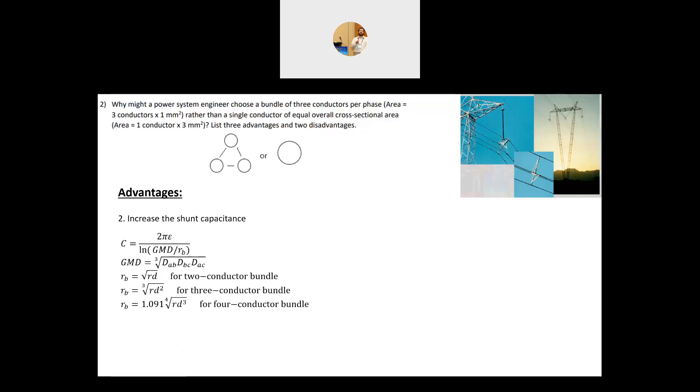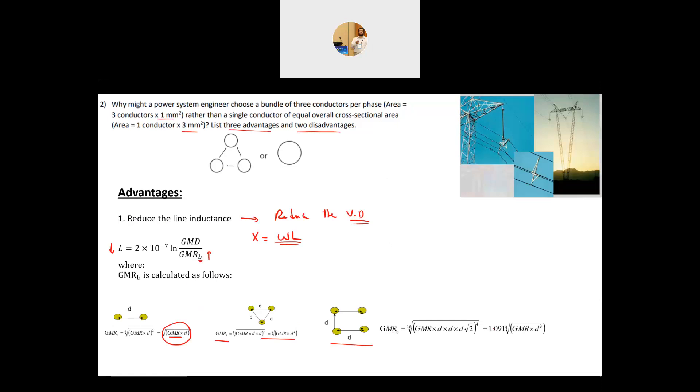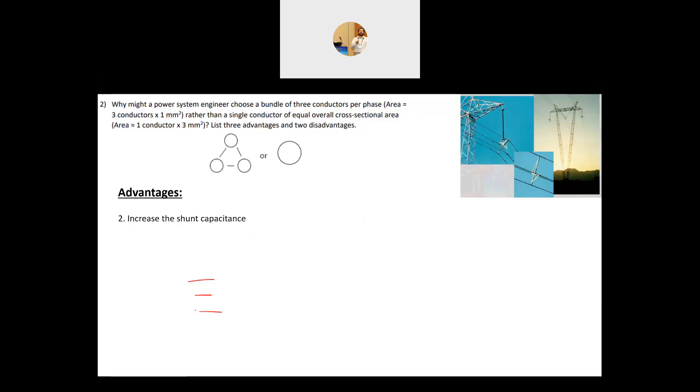Now the RB, the R for two conductors, three and four, they have exactly the same formula like the geometric mean radius, except instead of GMR, you will have the radius itself. It's exactly the same formula. So again, you are increasing RB and hence decreasing this total quantity and as a result, you increase C.